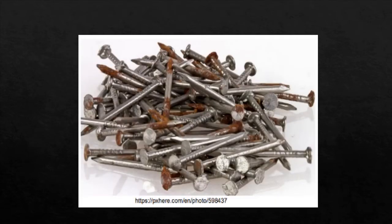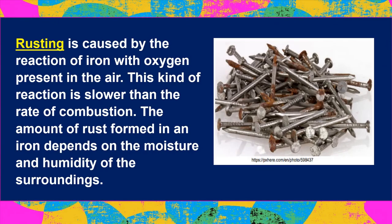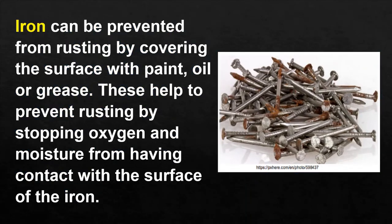How about this nail? Can you see? It is rusting already. Rusting is caused by the reaction of iron with oxygen present in the air. This kind of reaction is slower than the rate of combustion. The amount of rust formed in an iron depends on the moisture and humidity of the surroundings. An iron can be prevented from rusting by covering the surface with paint, oil, or grease. These help to prevent rusting by stopping oxygen and moisture from having contact with the surface of the iron.